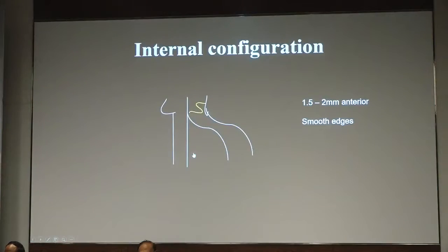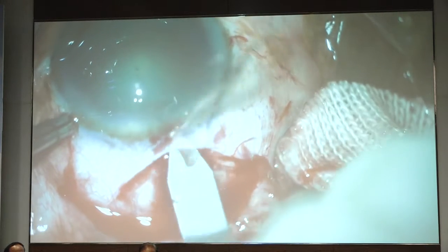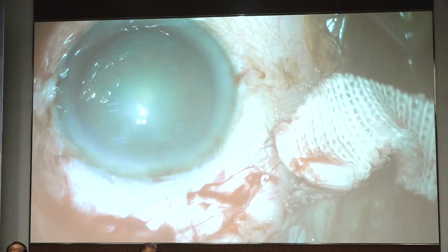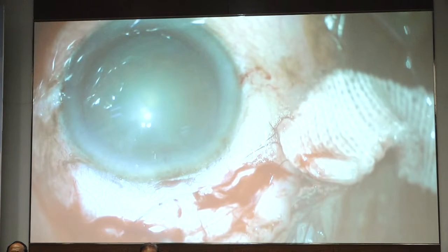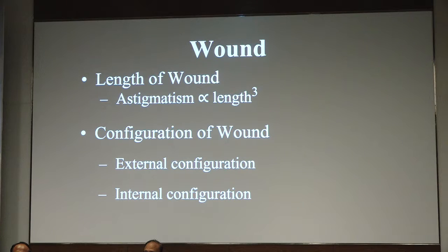Regarding internal configuration, it has to be only 1.5 to 2 millimeters anterior. When you dip and enter, your edges also have to be very smooth. You should not have saw-like movements — going up and down will cause ragged edges internally. At the limbal region it's very tough, so you have to enter slightly anterior to the limbal region. The length of the wound is directly proportional — three times proportional — to the astigmatism, which is why we spoke about cord length and arc length.